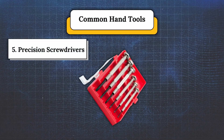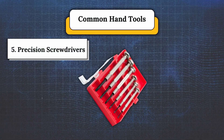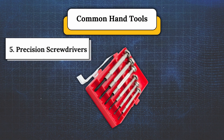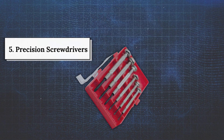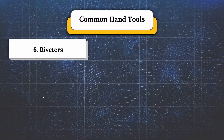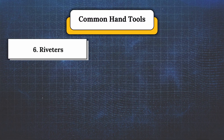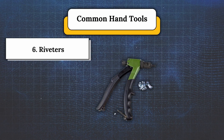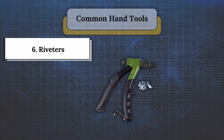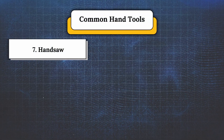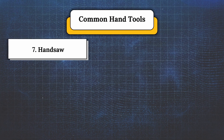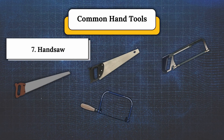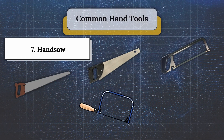Fifth, precision screwdrivers — flathead, Phillips, and Torx, available in much smaller sizes. Sixth, riveters — number one, hand riveter, a manual tool requiring physical force. Seventh, hand saw — examples are rip saw, cross-cut saw, hacksaw, coping saw, and others.